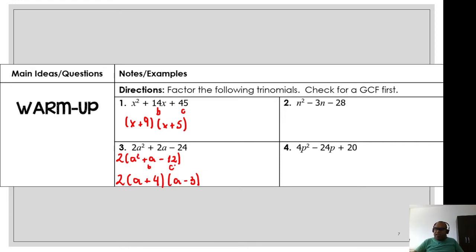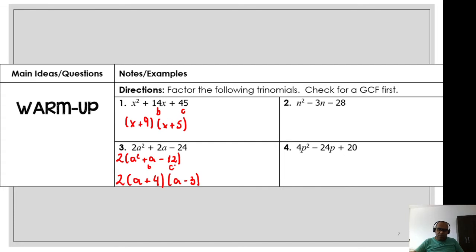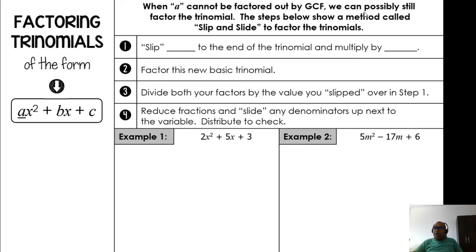That's our warm-up. Now let's talk about factoring trinomials of the form ax² + bx + c. Pay attention here! When a cannot be factored out by GCF, we can possibly still factor the trinomial. The steps below show a method called 'slip and slide' to factor these trinomials.